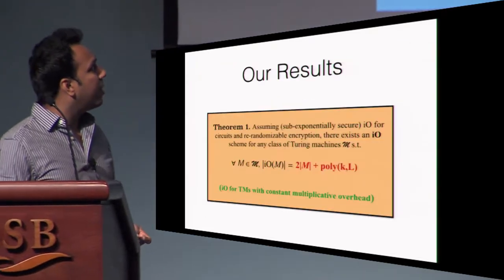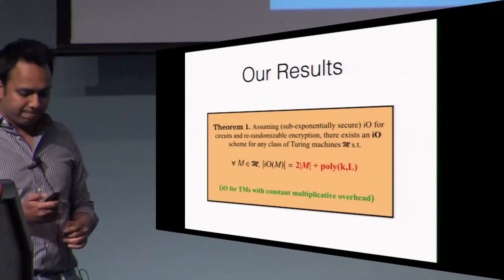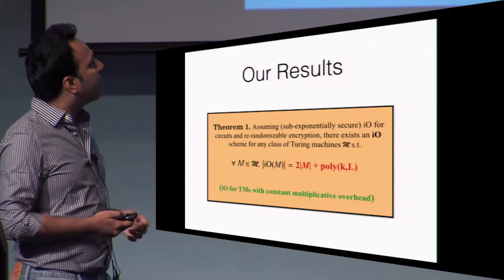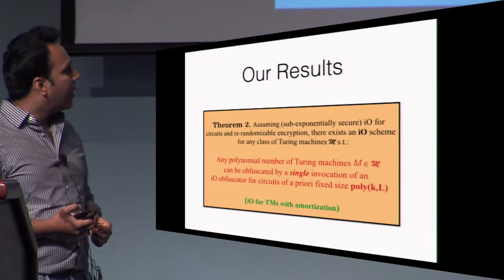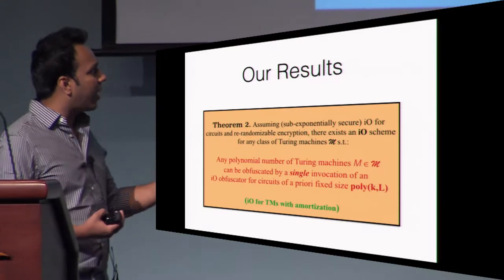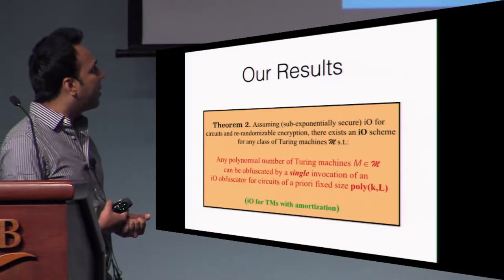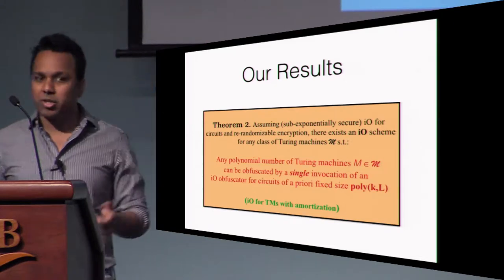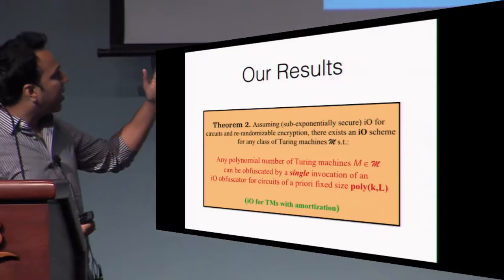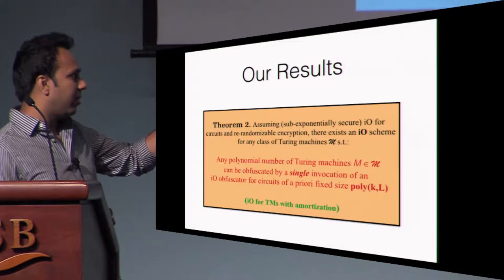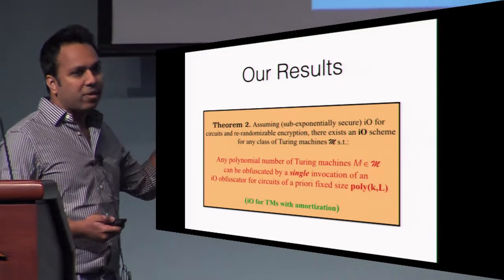Our first result is I.O. for Turing machines with constant multiplicative overhead, where the constant is simply two. The assumptions are sub-exponentially secure I.O. for circuits and a re-randomizable encryption scheme. The second result is I.O. for Turing machines with amortization — in fact, the best possible amortization — where if we want to obfuscate some polynomial number of Turing machines, we can obfuscate them all by only making one invocation to an I.O. for circuits whose size is a priori fixed, and the size of the underlying circuit family only depends on the security parameter and the input length bound L. The assumptions in this result are the same as the previous one.